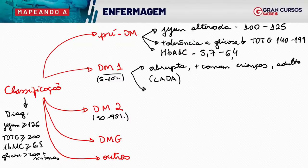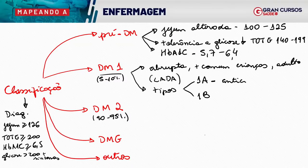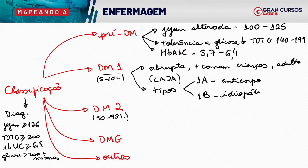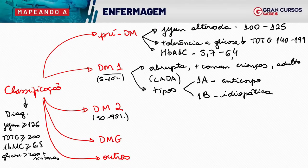O tipo 1 é subdividido em 1A e 1B. O 1A é quando se encontram anticorpos — há um anticorpo contra as ilhotas de Langerhans, com causa definida para a destruição das células beta. O tipo 1B é idiopático, sem anticorpo para fechar o diagnóstico. Isso não muda o tratamento de um para o outro. Normalmente não se preocupa em definir se é tipo 1A ou 1B.